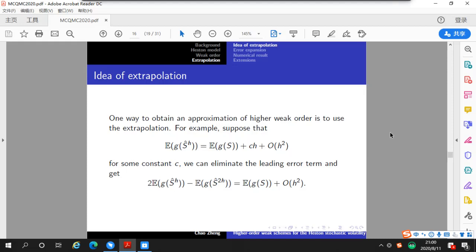After we have talked about the weak convergence, let's move on to the extrapolation. We have discussed that one way to obtain an approximation of higher order is to use extrapolation. The idea behind extrapolation is simple. For example, suppose the approximation error can be expanded in this form, which means that the approximation is of first weak order. Extrapolation means that we can eliminate the leading order term for higher orders.